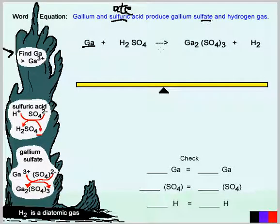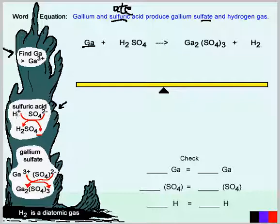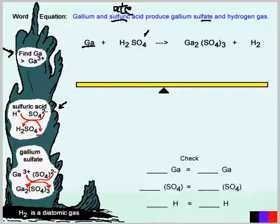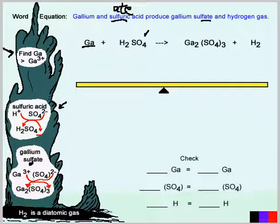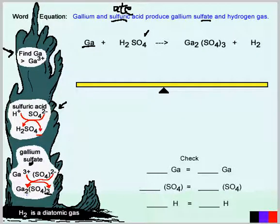We look for sulfate and see it has a charge of 2−. Acids have hydrogen, and hydrogen has a 1+ charge. Using the criss-cross method, we don't write the one — the two comes over, giving us H₂SO₄ as sulfuric acid. Gallium from the periodic table has a charge of 3+. We combine it with SO₄ in brackets with a 2− charge. Criss-crossing gives three SO₄ ions and two gallium ions in the formula unit.